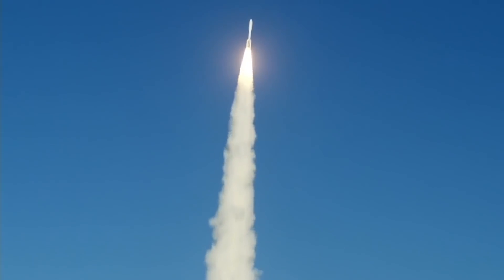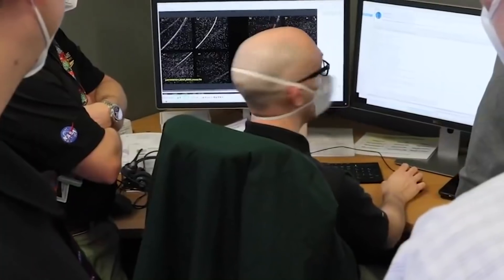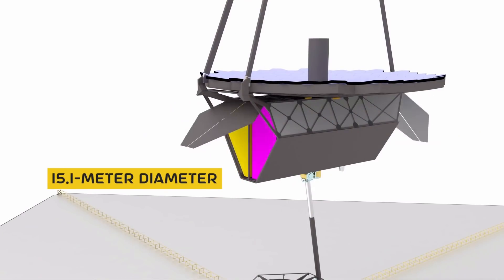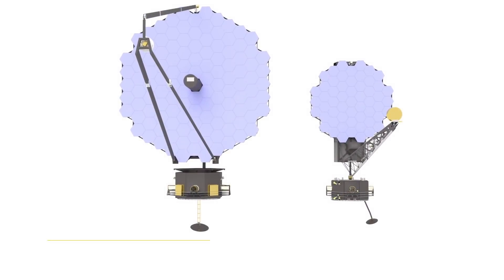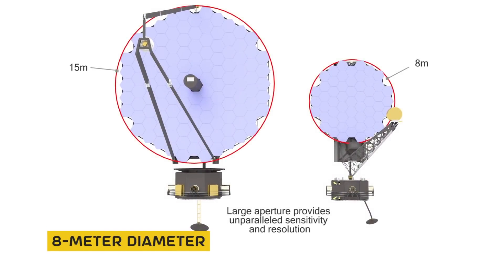Design. Before we even think about rockets, orbits, and whatnot, the LUVOIR study team has to decide between two variants: one with a 15.1-meter diameter telescope mirror, LUVOIR-A, and one with an 8-meter diameter telescope mirror, LUVOIR-B.